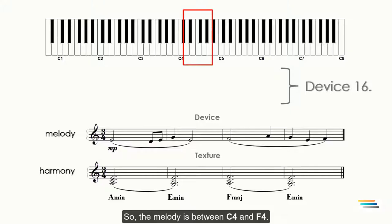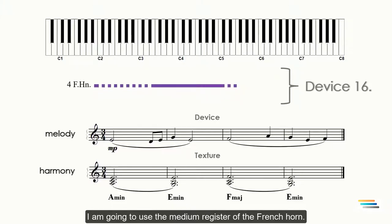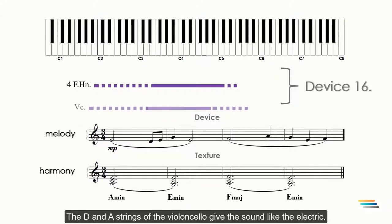The melody is between C4 and F4. For this one, I want to get a warm sounding. Of course, you can choose other devices. For getting warm sounding, I'm going to use the medium register of the French horn. The D and A strings of the violoncello give a sound like electric.